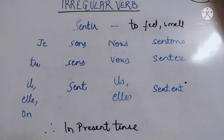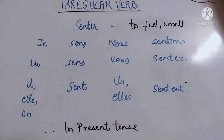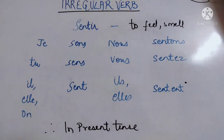'Sentir' means 'to feel' or 'to smell'. Remove the infinitive part I-R. We are left with the stem S-E-N-T. Let's do the conjugation: 'je sens', 'tu sens', 'il sent', 'nous sentons', 'vous sentez', 'ils sentent'.